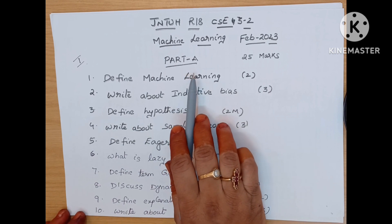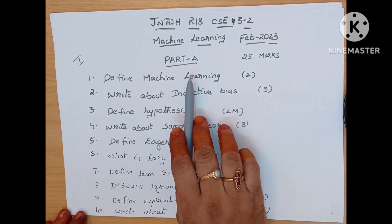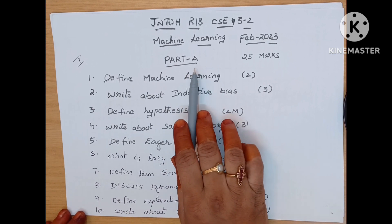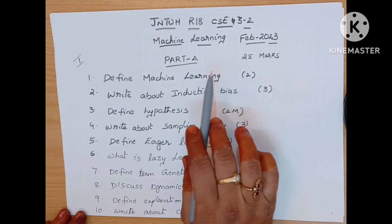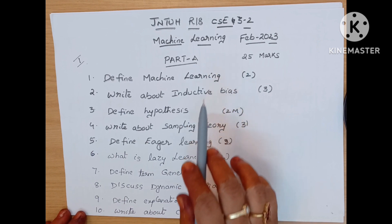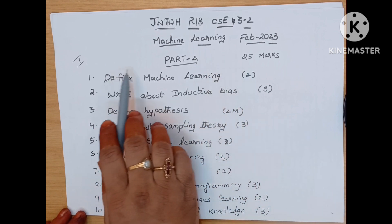This paper contains two parts, Part A and Part B. Part A contains 25 marks and Part B is for 50 marks.